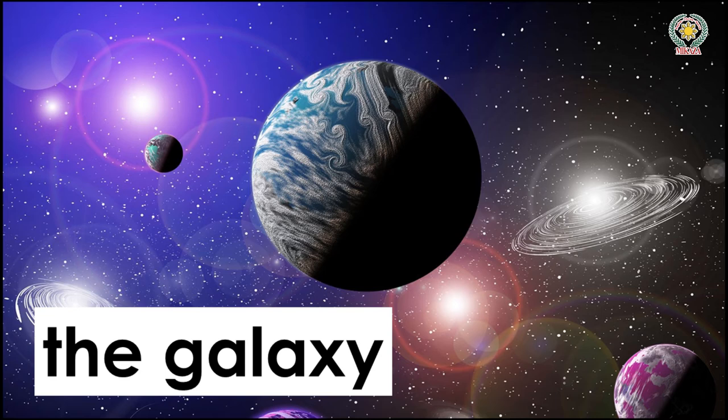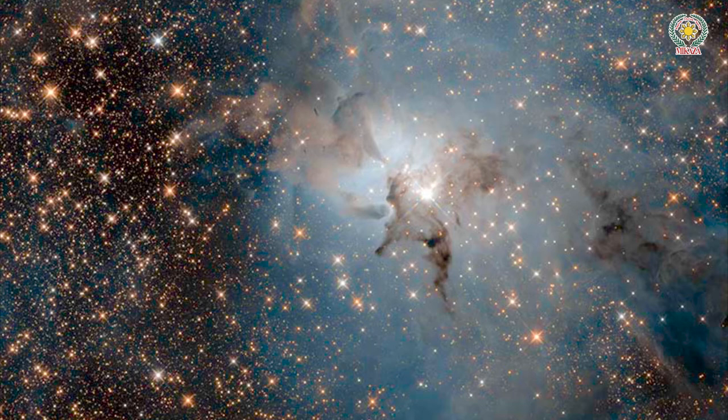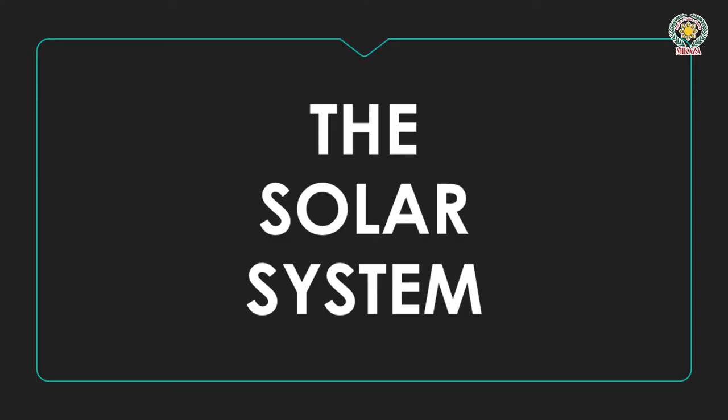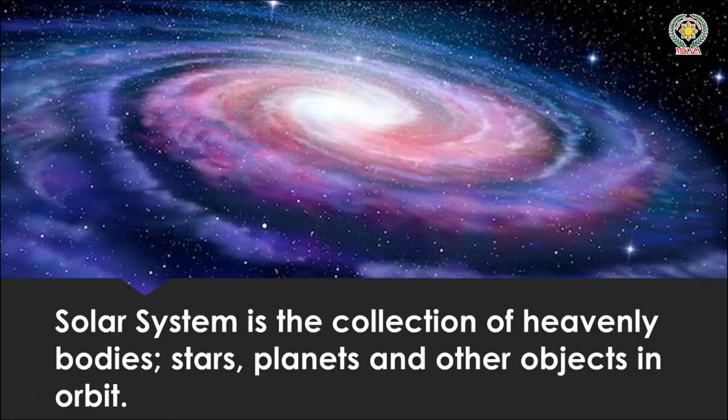Now take a look at the picture here in the third slide — you're going to see the universe; this is what we see from the earth. Now let's talk about the solar system, which is also part of the universe. The solar system is a collection of heavenly bodies: stars, planets, and other objects in orbit.